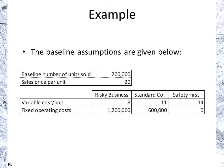The baseline assumptions are: 200,000 units sold at a sales price of $20 each. Risky Business has a variable cost per unit of $8, whereas Standard Co and Safety First have $11 and $14 respectively. Risky Business also has the highest fixed costs, and Safety First has none.